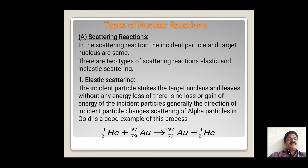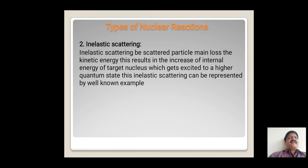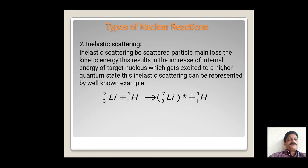In inelastic scattering, the scattered particle may lose kinetic energy. This results in an increase of internal energy of the target nucleus, which gets excited to a higher quantum state. For example, hydrogen is the incident particle and lithium is the target nucleus. When hydrogen is incident on lithium, there is a loss of kinetic energy and an increase of the internal energy of lithium.